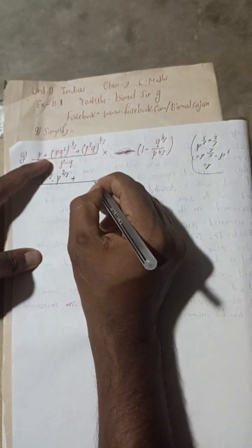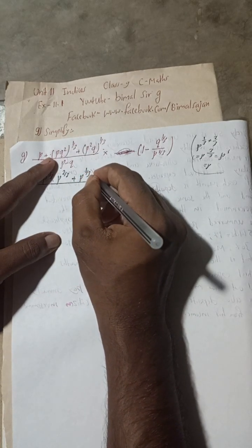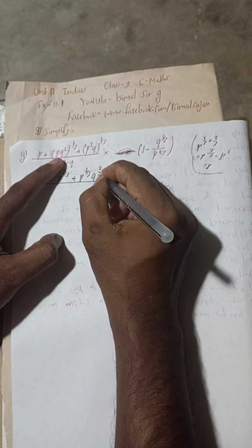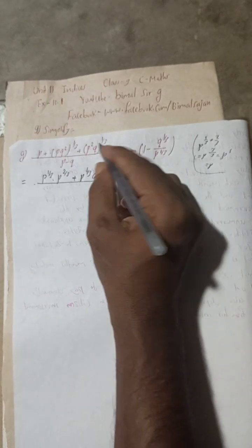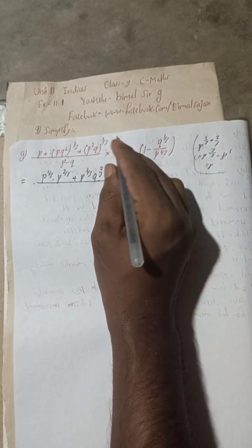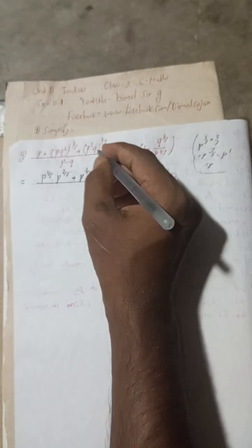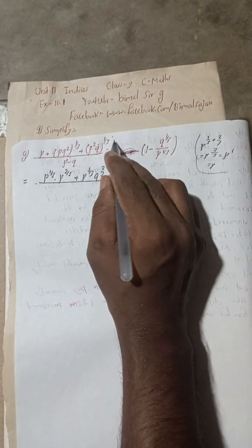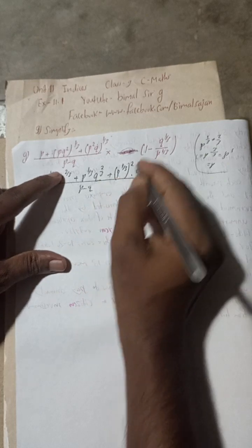This whole power 1/3 term gives us P to the power 1/3. The Q² term with power 1/3 becomes Q to the power 2/3, since the square and the 1/3 multiply: 2 × 1/3 = 2/3. Similarly, the P²Q whole power 1/3 gives P to the power 2/3 — written as P^(1/3) whole squared — and Q to the power 1/3. The denominator has P minus Q and the term 1 minus Q^(1/3) / P^(1/3).